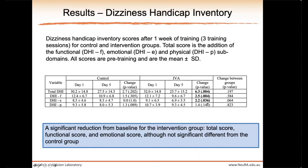The Dizziness Handicap Inventory (DHI) is a subject-reported symptom scale — a 25-item questionnaire quantifying the impact of dizziness on daily life with three domains: functional, emotional, and physical. The maximum impairment score is 100; zero indicates no disability. There was a significant reduction from baseline for the intervention group in total score, functional score, and emotional score. However, the improvement in the intervention group was not significantly larger than that seen in the control group.